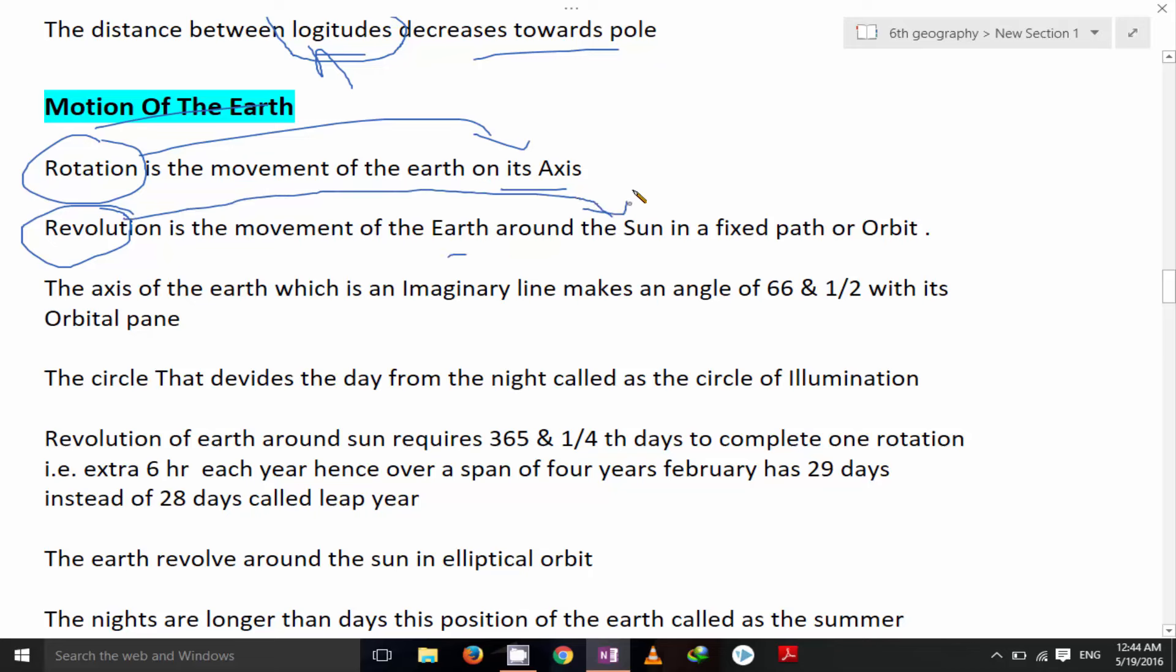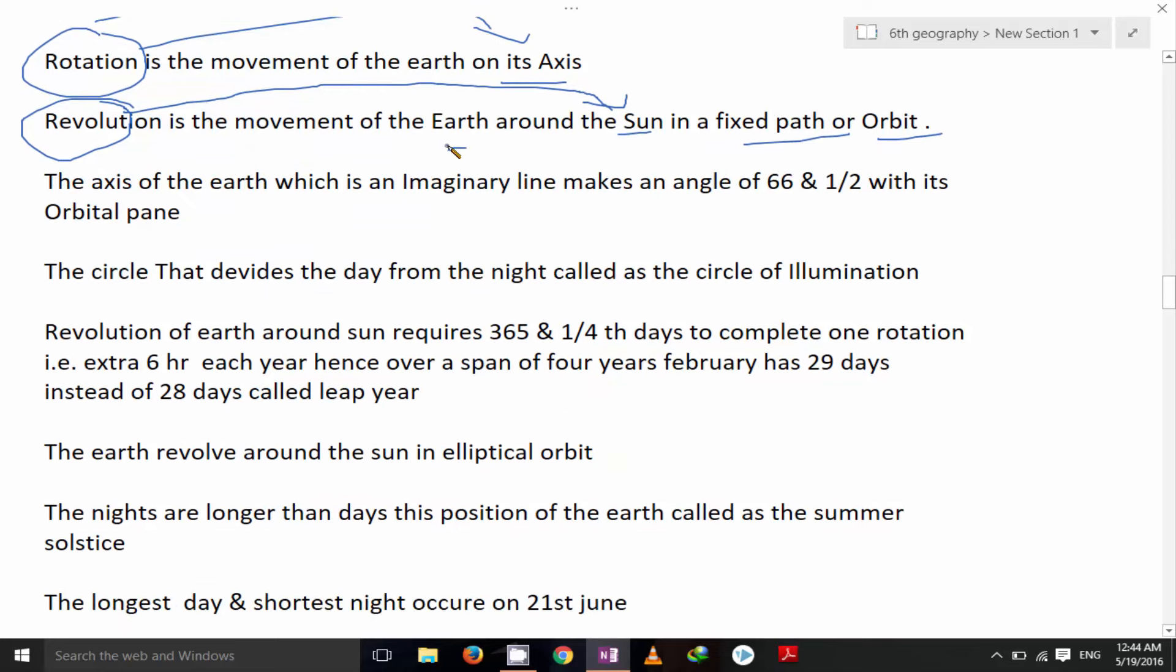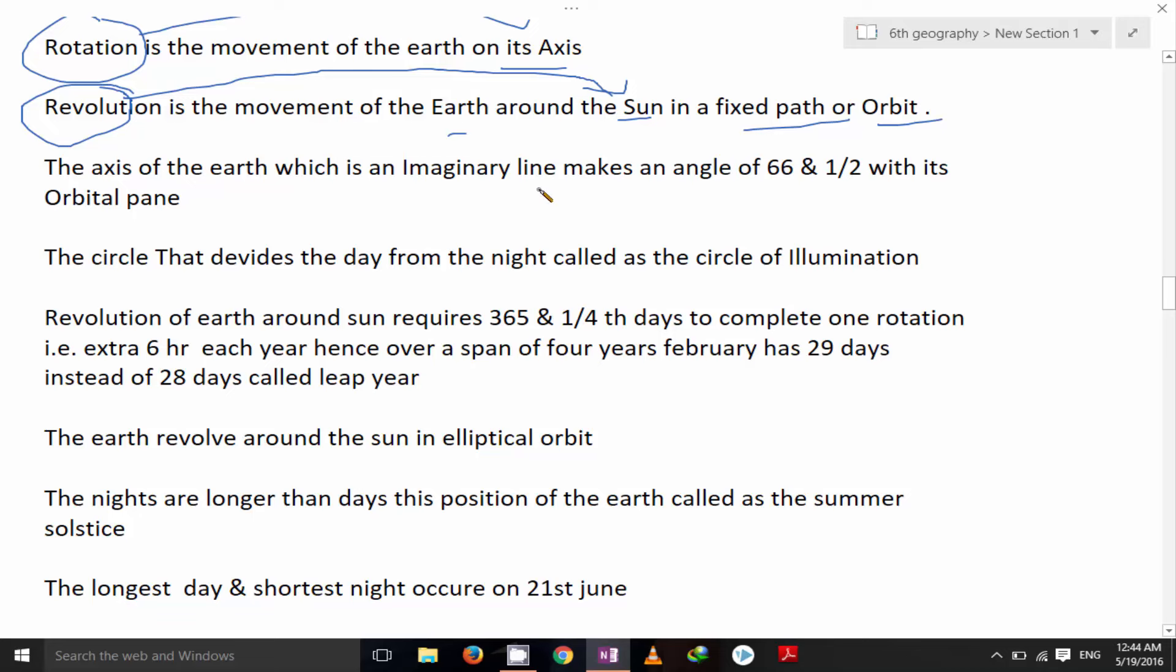Revolution around the sun in fixed path or orbit. The axis of the earth which is imaginary line makes an angle of 66 and half degree with its orbital plane. The circle that divides the day from the night called as a circle of illumination. Days and nights separated by the circle of illumination.